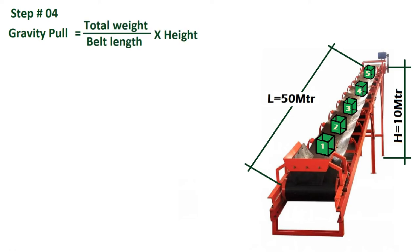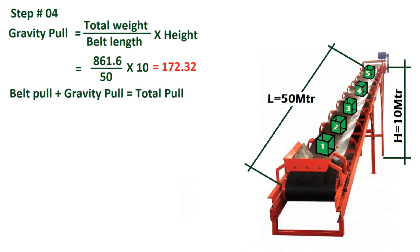In step four, we need to calculate the gravity pull. We divide the total weight by the belt length and multiply by the height, giving us a gravity pull of 172.32. The belt pull plus the gravity pull gives us the total pull of 603.